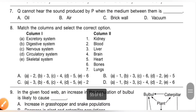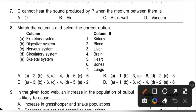Seventh question: Q cannot hear the sound produced by P when the medium between them is blank. Options are A — oil, B — air, C — brick wall, D — vacuum. Sound waves need a medium to travel, so they cannot travel in a vacuum. Option D is the correct answer.